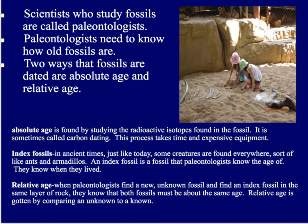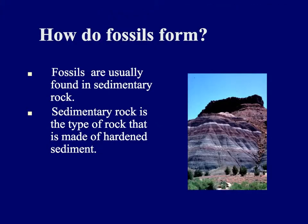Then there's relative age — that's when we use an index fossil to get an idea of how old something is without being exact. As we've learned in the rock cycle, rocks get ground up into tiny particles called sediment, and then this sediment can turn into sedimentary rock. Fossils are usually only found in sedimentary rock. Sedimentary rock is a type of rock that's made of hardened sediment.